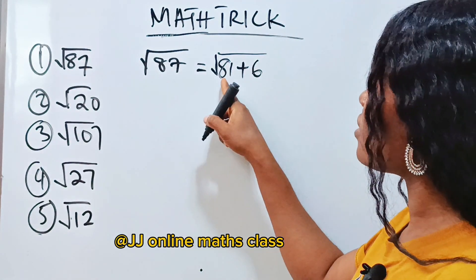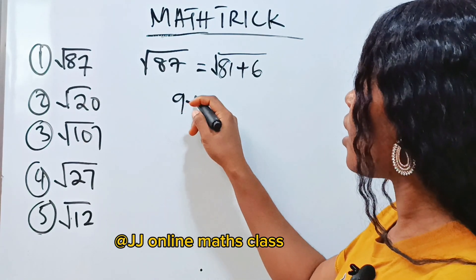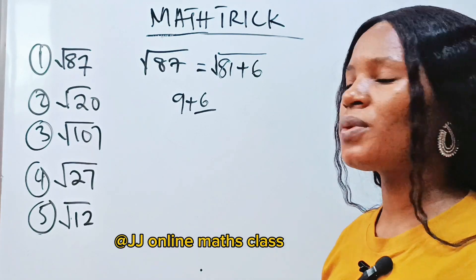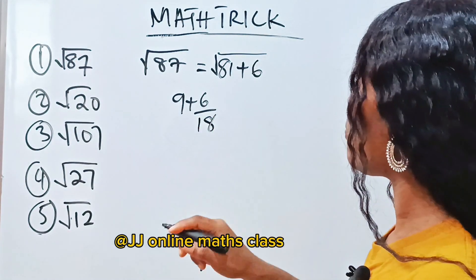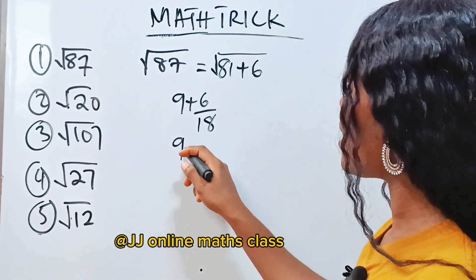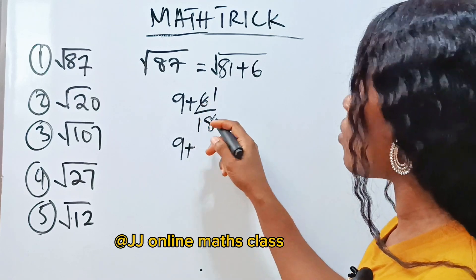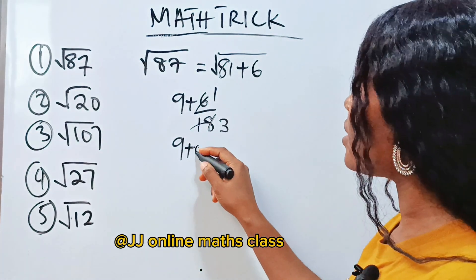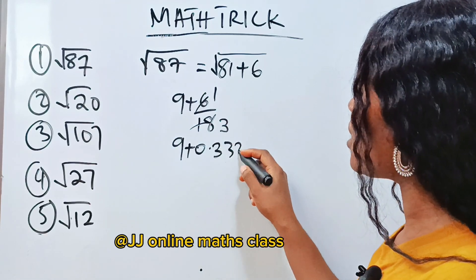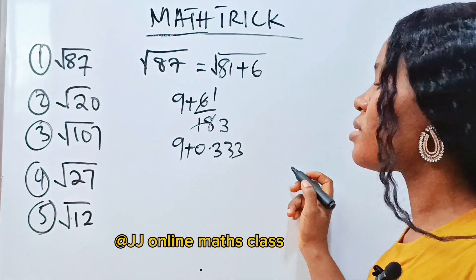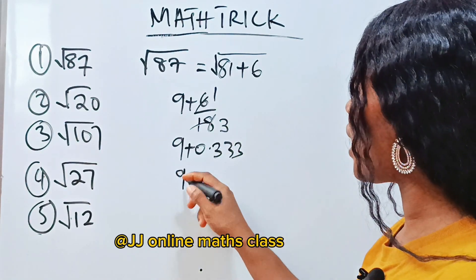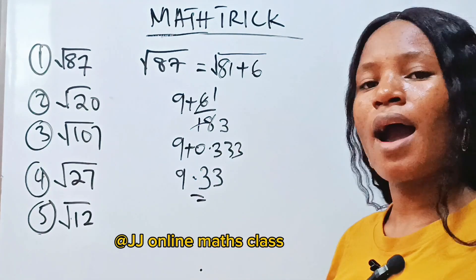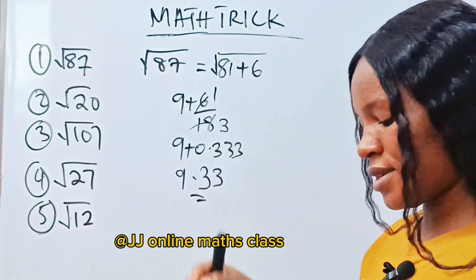Now we are going to find the square root of 81 is 9. Now write your plus 6 divided by... Now this 9 is what? Double of it is 18. So this is the same thing as 9 plus 6 divide itself, 1. If we divide 18, we have 3. Now 1 divided by 3 is 0.333. It continues like that. So that means we have 9.33 as our approximate value of square root of 87.